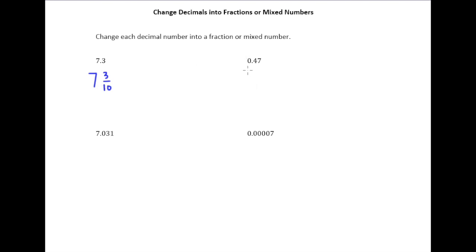If I move over here, notice there is no whole part, so I'm not going to have a mixed number here, I'm just going to have a decimal. So how do you say 0.47?